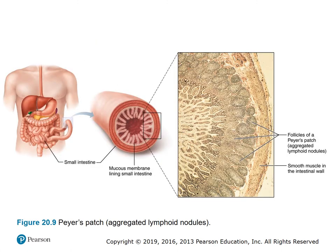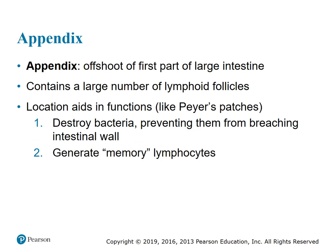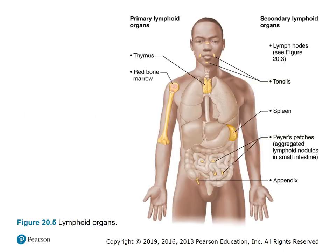Figure 20.9 shows the location of the Peyer's patches both diagrammatically and histologically. The appendix is an offshoot of the first part of the large intestine and contains a large number of lymphoid follicles. Its location aids its function similarly to the Peyer's patches: to destroy bacteria, prevent them from breaching the intestinal wall, and generate memory lymphocytes. Referring back to figure 20.5, looking at the secondary lymphoid organs, we've now covered the tonsils, the spleen, Peyer's patches, and the appendix.